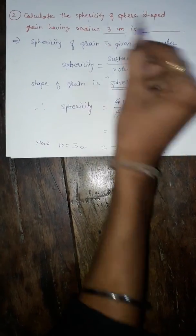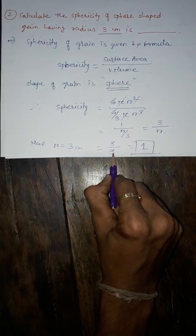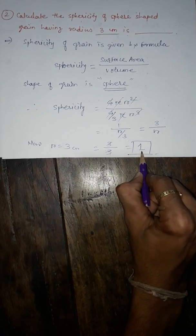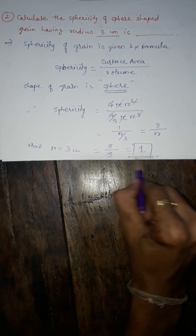Now, radius of the grain is given as 3 cm. Put the radius and calculate. The value of sphericity is 1.